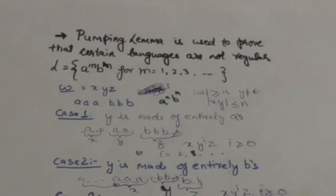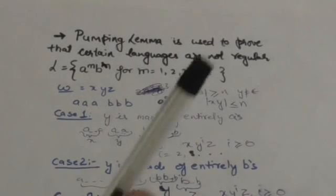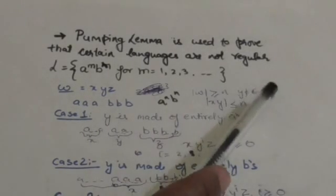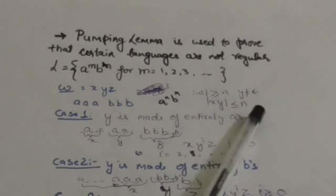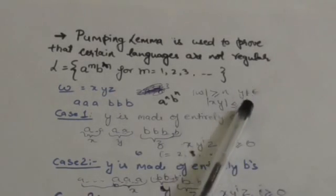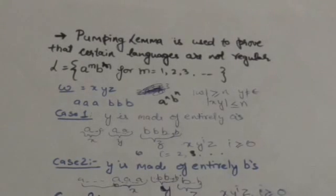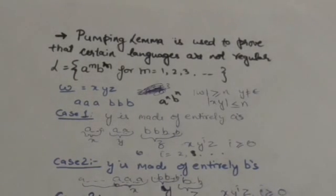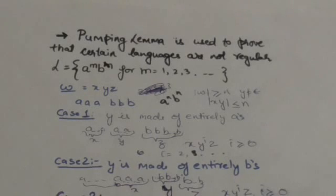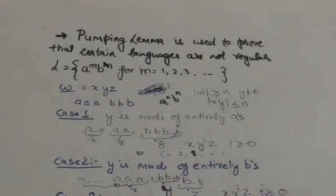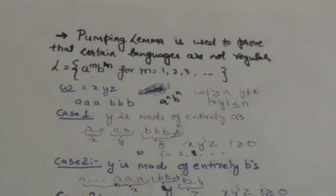Now divide the string into three parts x, y, z such that y is not equal to the empty string and the length of xy is less than or equal to n. Now prove that x y^i z does not belong to language L for some value of i greater than or equal to zero.